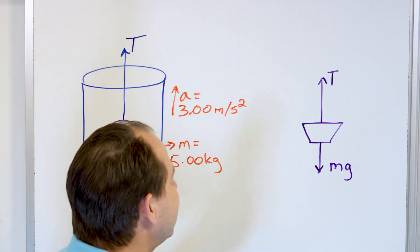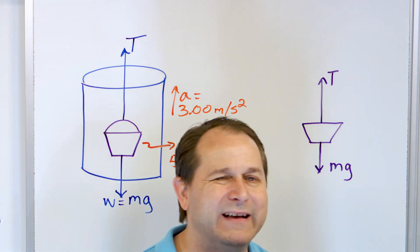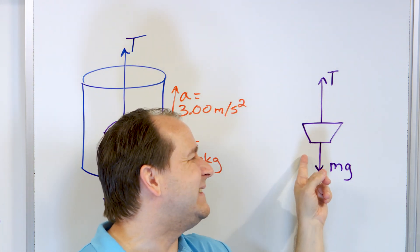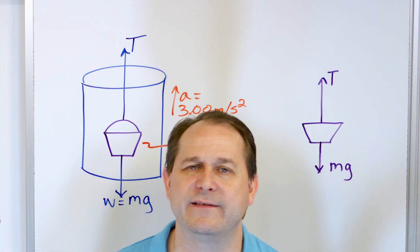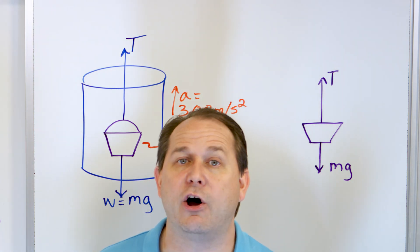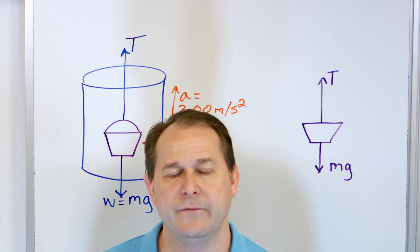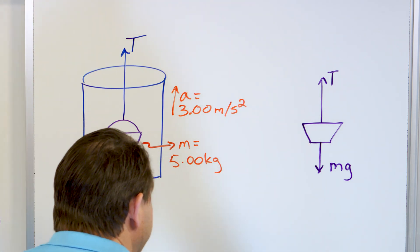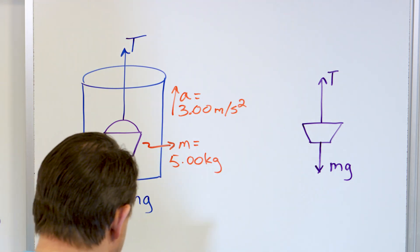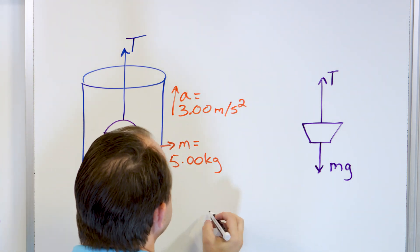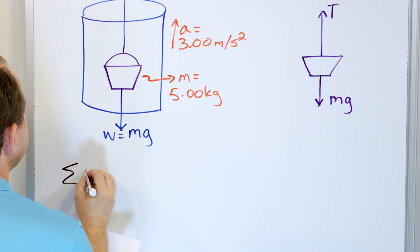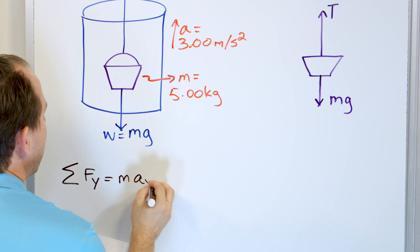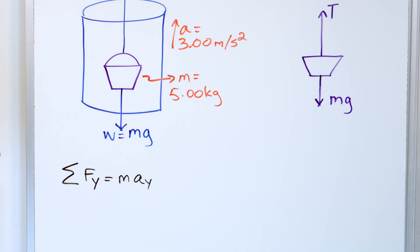I subconsciously drew the tension arrow bigger than the weight because this thing is accelerating upward. If the tension were exactly equal to the weight, we would have balanced forces in the y direction and no acceleration. But we know it's accelerating, so the tension must be larger. Now let's calculate the tension — how many newtons are in that rope. The sum of the forces in the y direction equals m times a in the y direction. There's nothing happening in the x direction.